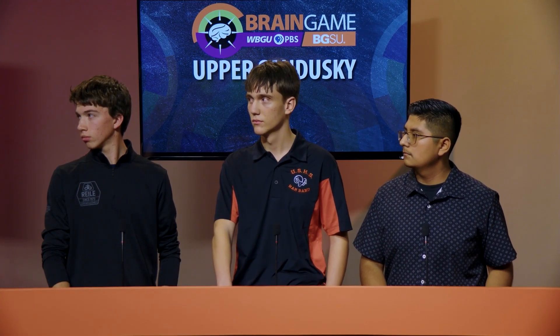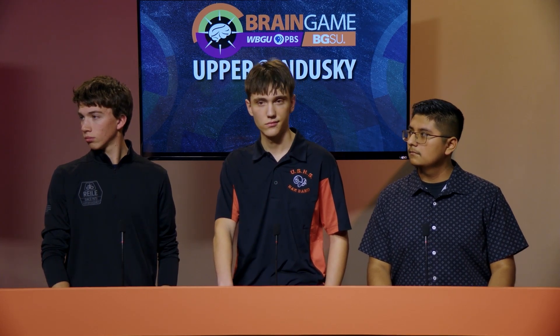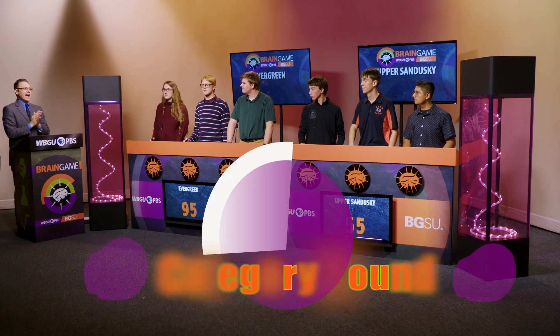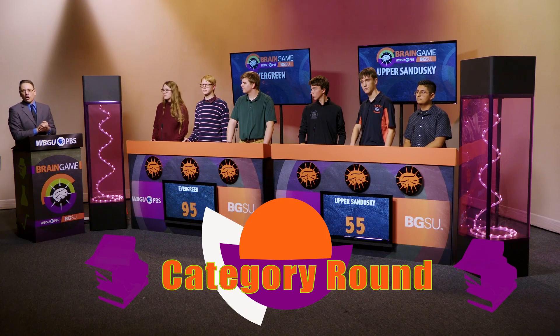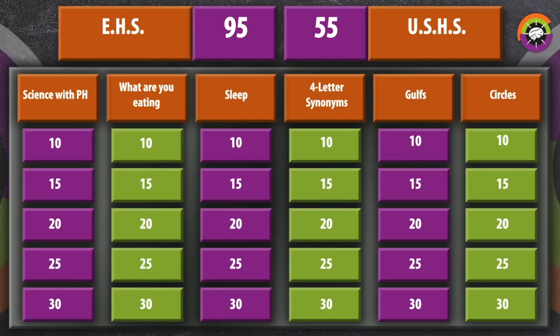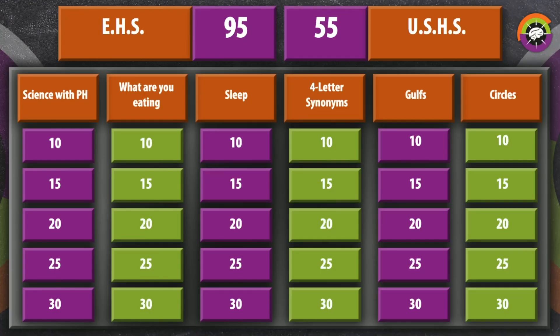Welcome back to BGSU Brain Game. Upper Sandusky with 55 points, Evergreen with 95 points. Let's welcome substitute players: for Evergreen in slot number one, we have Jada; for Upper Sandusky in slot number one, we have Jamison — both are juniors. This is the category round. There are six categories; questions are worth 10, 15, 20, 25, and 30 points. Deductions start now — if you go for 20, you're risking 20 points as well. There is one double-or-nothing question hiding somewhere. Upper Sandusky has the first selection.